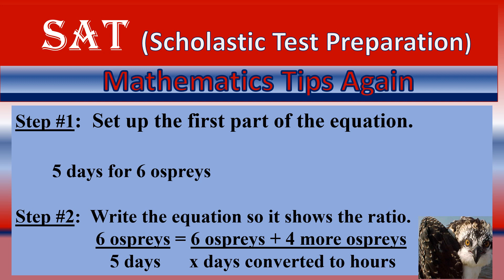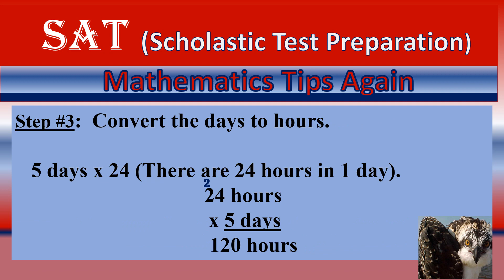The number of days is any variable that will be converted into hours, so make sure you get that. Convert the days into hours: five days times 24. Why are we doing 24? Because there are 24 hours in one day, and it asks you hours, not days. 24 hours times five days is 120 hours.